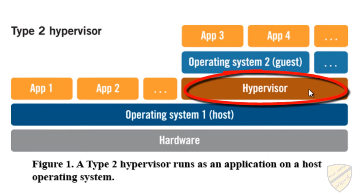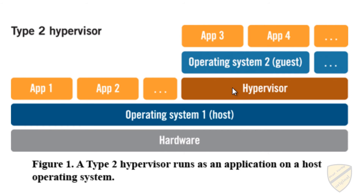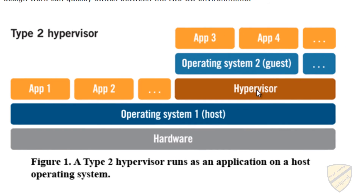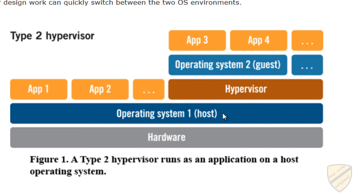We see this block labeled 'hypervisor' — this is our type 2 hypervisor. What makes it a type 2 is that it's running on top of the operating system; it's not interacting directly with the hardware. It's counting on the host OS to interact with the hardware. So whatever the hypervisor needs to do, it has to go through the host OS to get to the hardware. It doesn't communicate directly — there's an extra layer there.